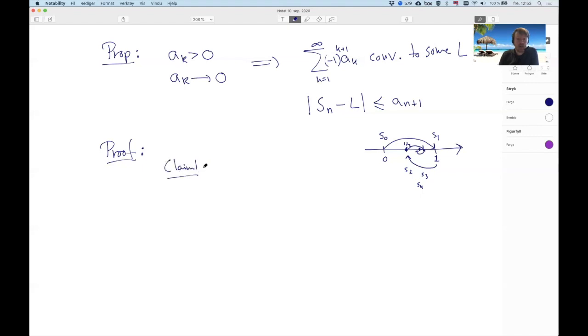So we have a couple of claims here. Claim one: S_{2n} increase and moreover they're bounded above by S_1. And what does this imply? By Bolzano lemma, there exists some value, let's call it A, such that the S_{2n} converge to A.